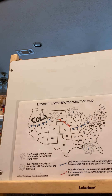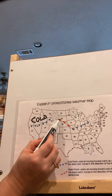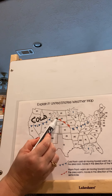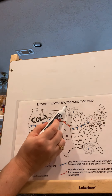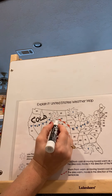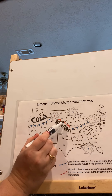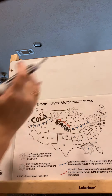A warm front is the opposite — it brings warm weather. It is represented as a red line with red half circles. Again, those half circles are pointing in the direction that it's moving. The warm air is behind it, and as it moves, it brings the warm air with it.